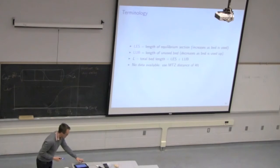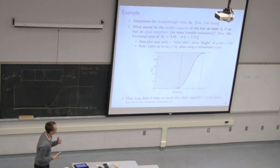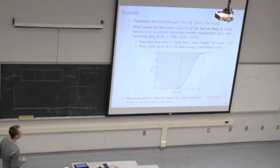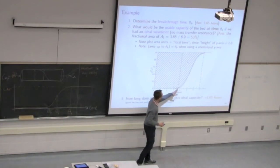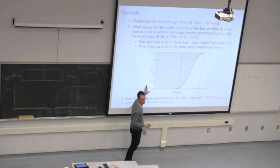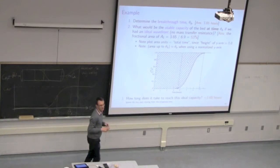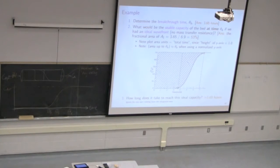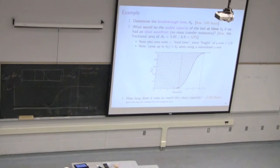Coming back to this question: when breakthrough occurs at time 3.65 hours, you've used 53% of this bed, but there is some capacity still remaining. However, we cannot use it — we have to stop the bed at that moment to regenerate. If we keep using the bed, CA will keep coming out the exit, which is undesirable.